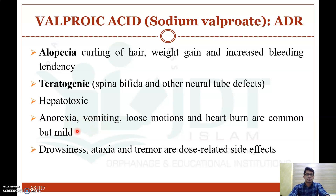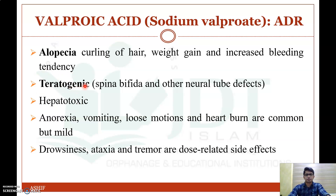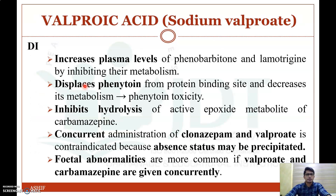It may also produce GI symptoms like anorexia, vomiting, loose motion, and heartburn, as well as drowsiness, ataxia, and tremor as dose-related CNS effects. The important adverse drug reactions to remember are alopecia or curling of hair and its teratogenic potential. That is valproic acid.